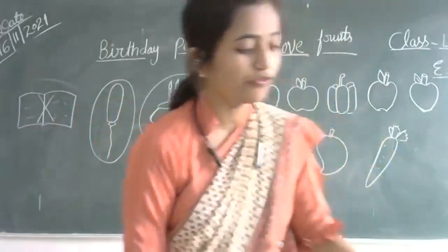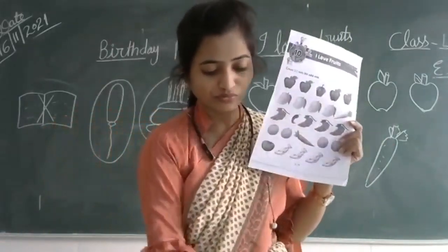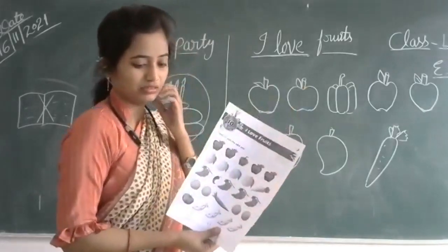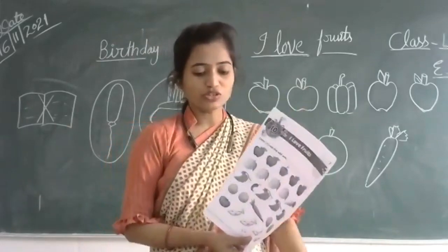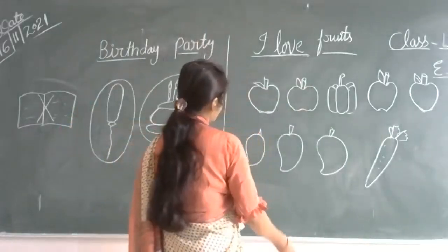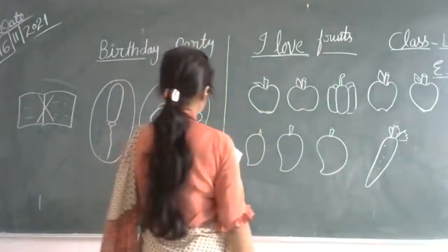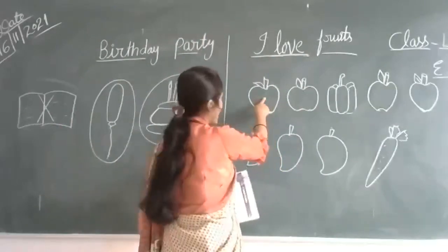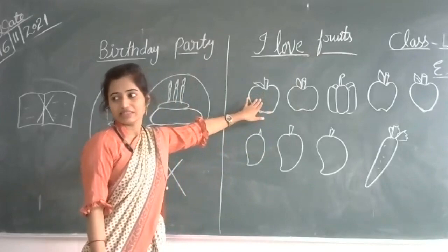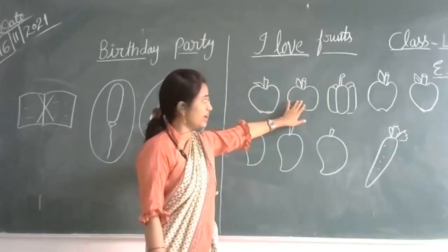Okay, now next topic: I love. So here are some pictures of food. See, here are some pictures of food. Those are not fruits — what shall we do? Cross them. This is an apple. Apple is a fruit. Yes.